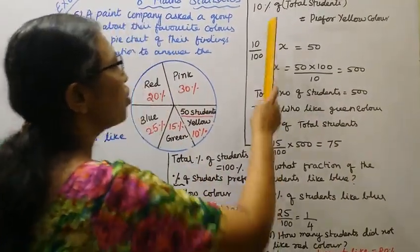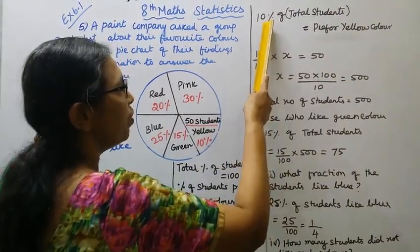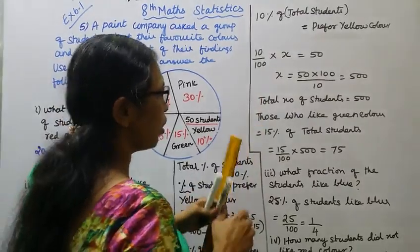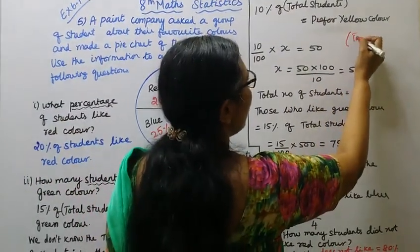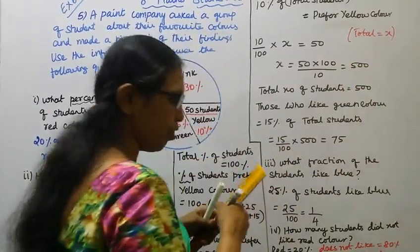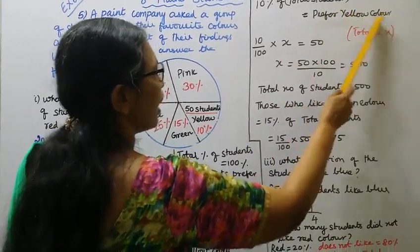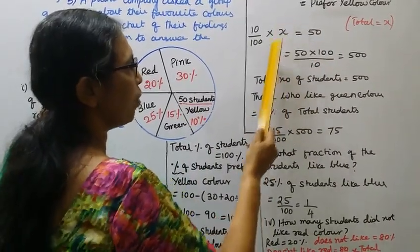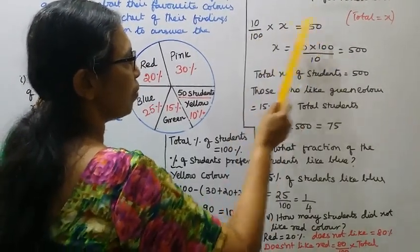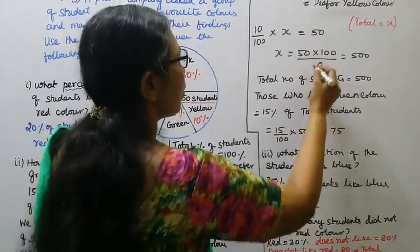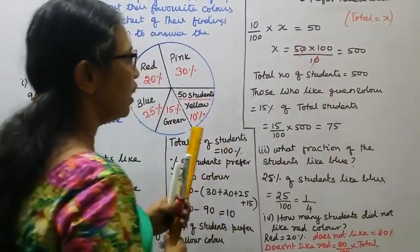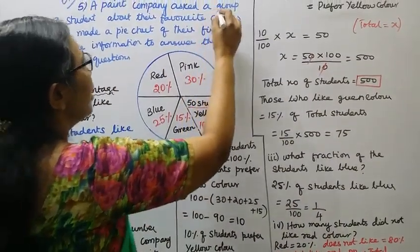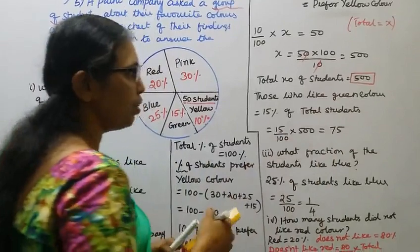10% of total students equals the number who prefer yellow color. 10 by 100 of total students equals 5. So total students x equals 5 into 100, which gives us 500. The total number of students is 500.